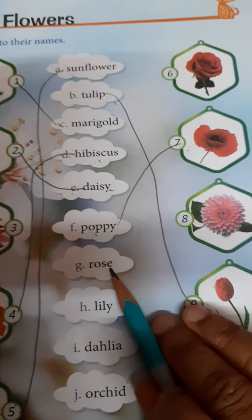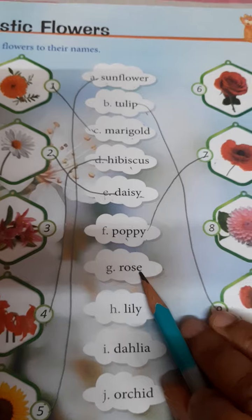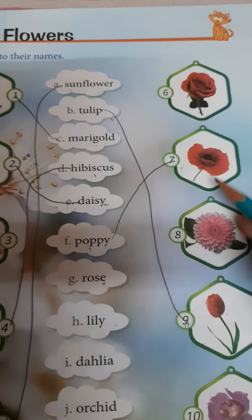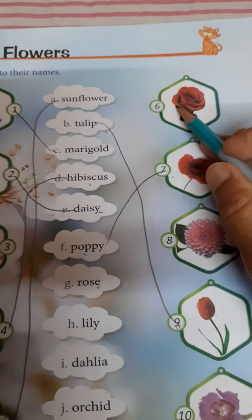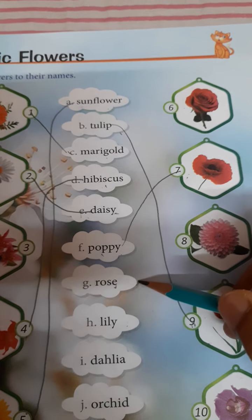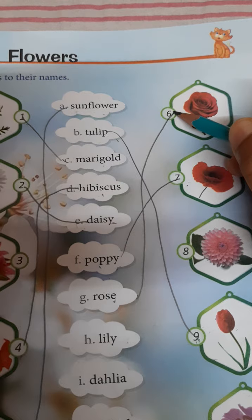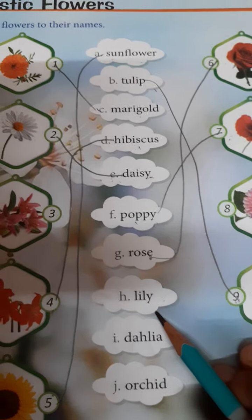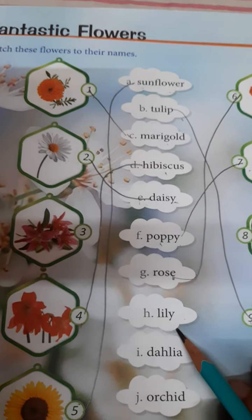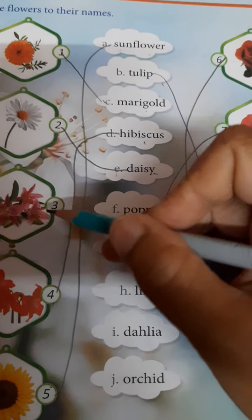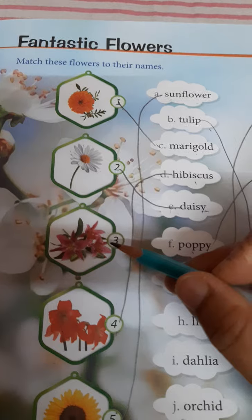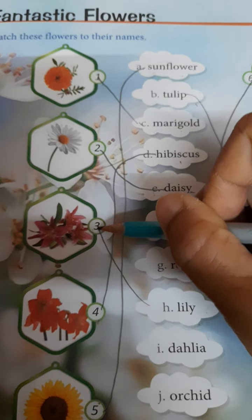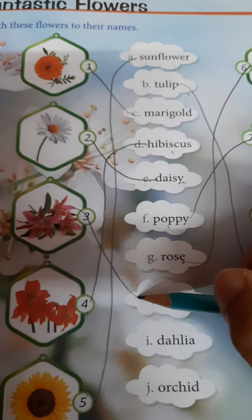Next name is rose. So children, does everyone know which one is rose? This one is rose. So you join like this. Next is lily. Which one is lily? This one is lily. So you join the flower name to the flower.